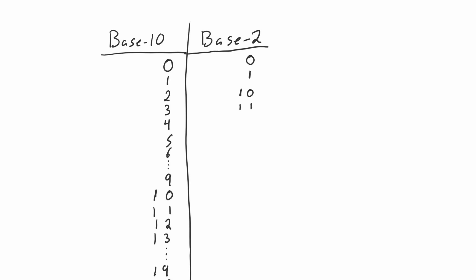We can no longer increment the right digit without affecting the left digit, so we have to add another digit and reset the ones back to zeros. When we go to five we do 1-0-1, incrementing the right digit by one. For six we keep the leading one, increment the next bit, and carry over so it goes to zero and the next digit goes up by one. Then seven would be 1-1-1. We can continue following this same process all the way to infinity, just like with the normal decimal number system.